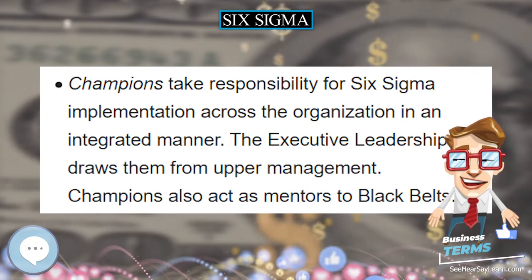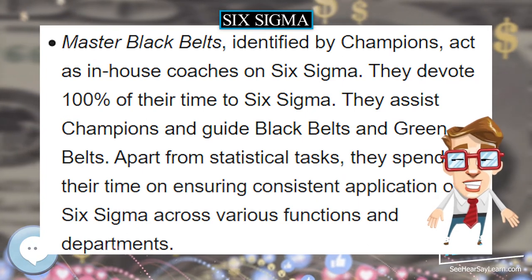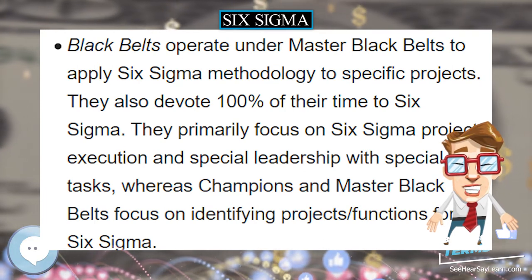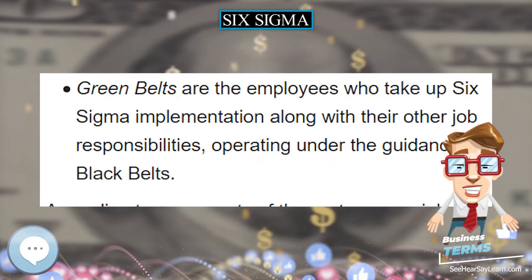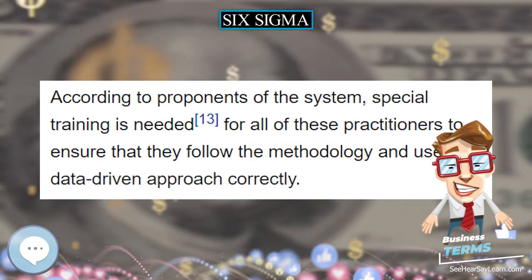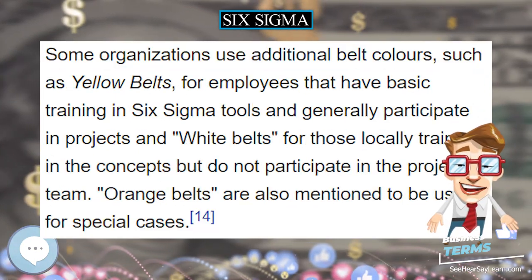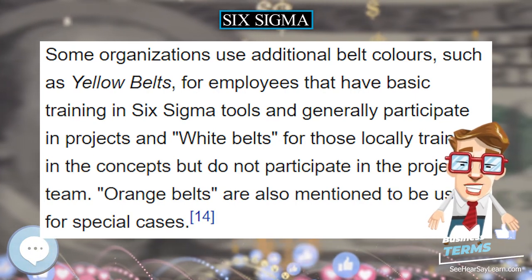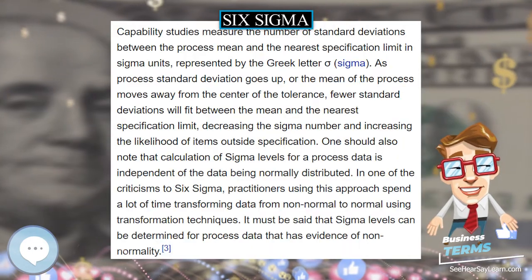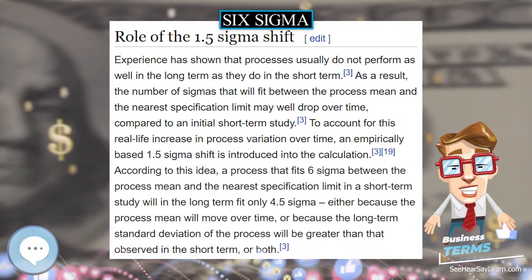As process standard deviation goes up, or the mean of the process moves away from the center of the tolerance, fewer standard deviations will fit between the mean and the nearest specification limit, decreasing the sigma number and increasing the likelihood of items outside specification. Calculation of sigma levels for process data is independent of the data being normally distributed. Critics note that practitioners spend a lot of time transforming data from non-normal to normal using transformation techniques, though sigma levels can be determined for data with evidence of non-normality.